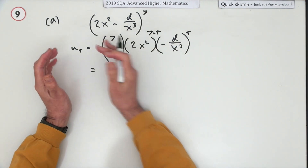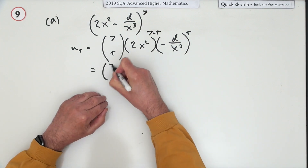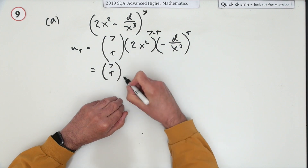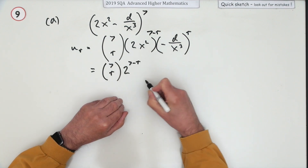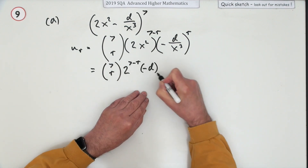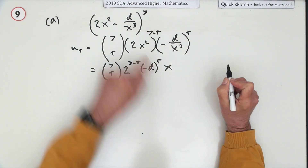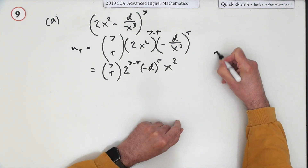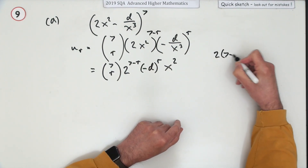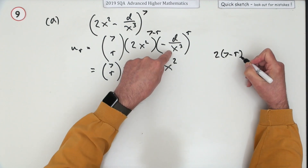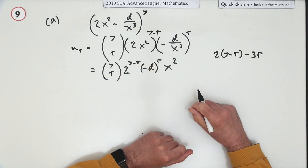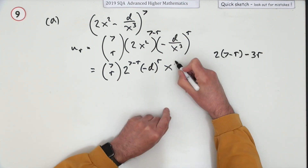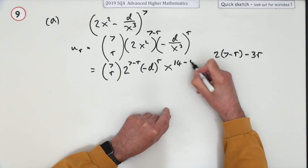You need to tidy up: numbers first, then variables. The numerical part is C(7, r), then 2 to the power of (7 minus r), then negative d to the power r. Then for the powers of x: the exponent is 2 times (7 minus r) from the first part, minus 3r from the second part. That simplifies to 14 minus 5r. So the general term has x to the power (14 minus 5r).